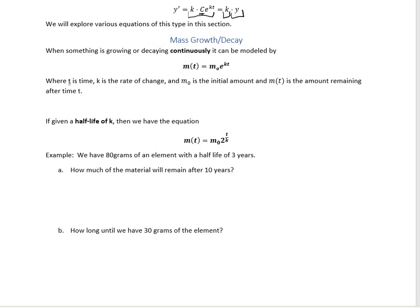One application is mass growth or decay — and by mass I mean the physical mass of something. When something is growing or decaying continuously, like radioactive material or organic matter, the amount of material left after t amount of time is going to be the initial mass times e to the kt, where k is the rate of change and t is the time. If something is decaying, k is negative; if something is growing, k is positive.